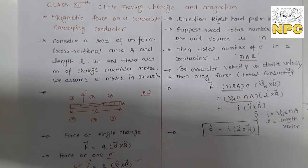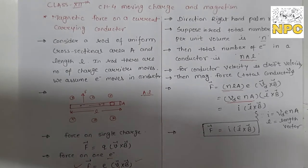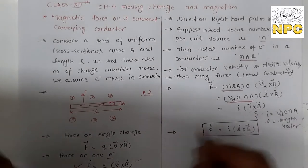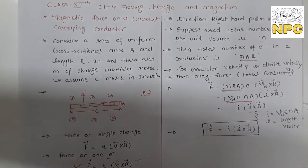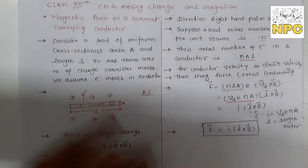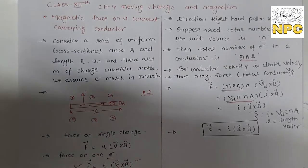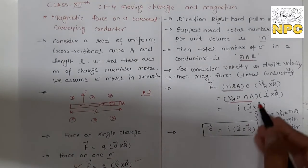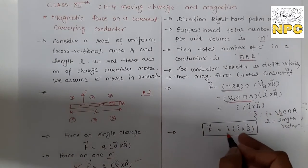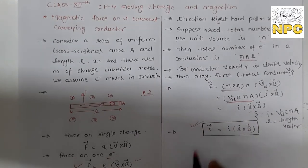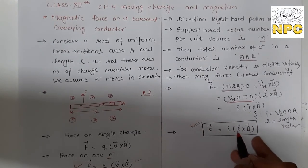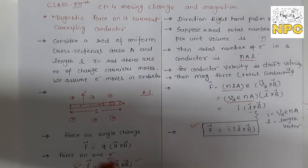And L cross B — this is the length vector and B is the magnetic field. Both are vectors, because the direction in which the conductor is placed matters. So L cross B gives us the formula: force F is equal to I into L cross B. This is the total force on a current-carrying conductor.